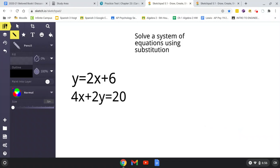how you would write it is 4x plus 2, and now to substitute for y, it's not y, it's 2x plus 6, because y equals 2x plus 6. So we can just substitute it in, and now you just put equals 20.